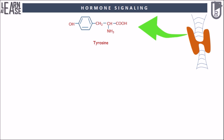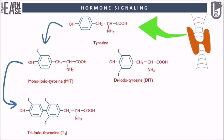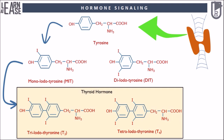The thyroid gland utilizes the amino acid tyrosine as a precursor. As the first step, the thyroid gland adds iodine to tyrosine to produce two intermediate molecules — monoiodotyrosine and diiodotyrosine — by a process very similar to chemical halogenation. Further, one molecule each of monoiodotyrosine and diiodotyrosine couple to produce triiodothyronine (T3), and two molecules of diiodotyrosine couple to produce tetraiodothyronine (T4).